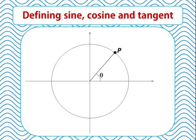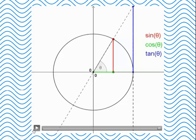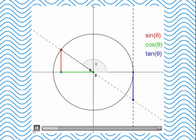To deal with tangent, we introduce a tangent line at the point (1, 0). We extend our radius through P and call Q the point where this radius meets that tangent line. The x-coordinate of Q is always 1, but the y-coordinate of Q is called tan of theta. So tan θ is the y-coordinate of the point where the radius at angle theta meets the tangent at (1, 0). This gives us our complete unit-circle definitions of sine, cosine and tangent, and as we change theta we can see how each of these values changes.